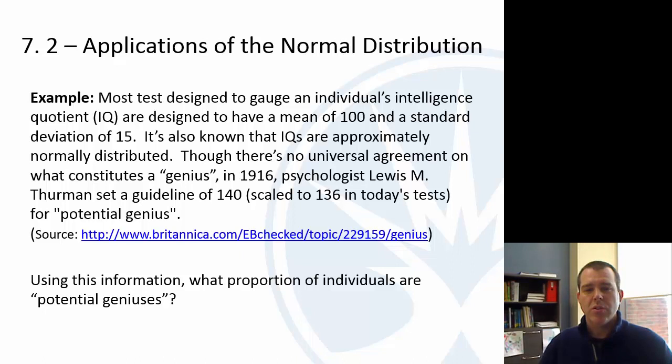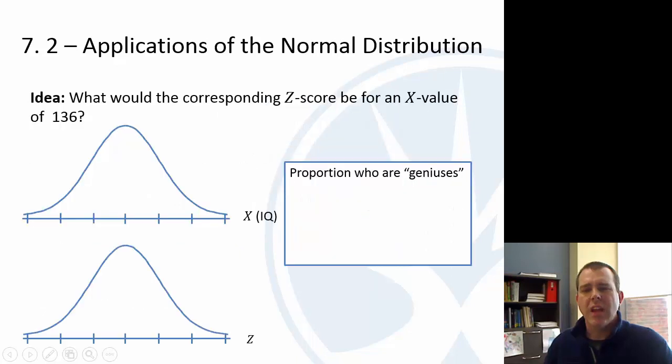But they are very frequently used to maybe assess someone and see a gauge of their intelligence. So there's no guideline for exactly what it means to be a genius. This psychologist from early 20th century set a guideline of 140, which today has to be 136 for a genius. So the question is, if IQ scores have a mean of 100 and a standard deviation of 15, what proportion of individuals are potential geniuses? So let's take a look at this.